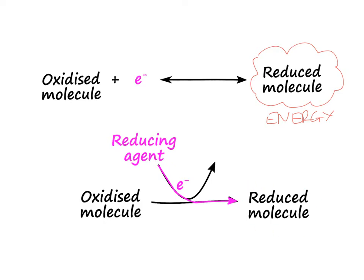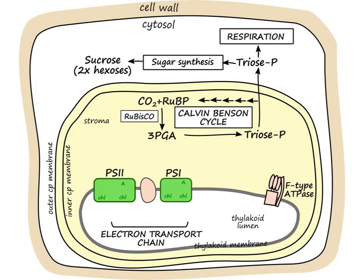Photosynthesis is all about this process, and ultimately about making a reduced molecule called NADPH, or sometimes referred to as NADP reduced. So let's have a look at the process of photosynthesis. Here I've got either a plant or an algal cell, with the chloroplast in the middle. The whole point of photosynthesis is to make sugars, but that's a multi-step process — photosynthesis doesn't make sugars directly. Sugars are made in the cytosol from molecules called triose phosphates.